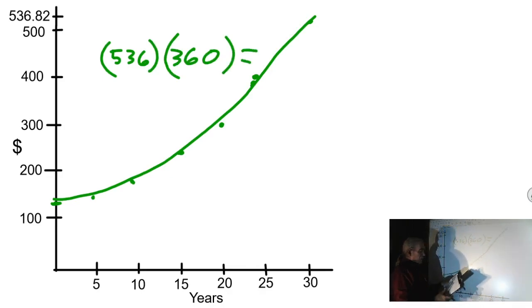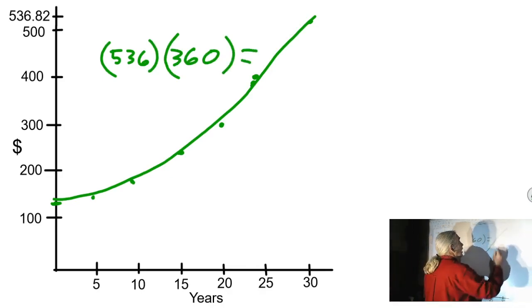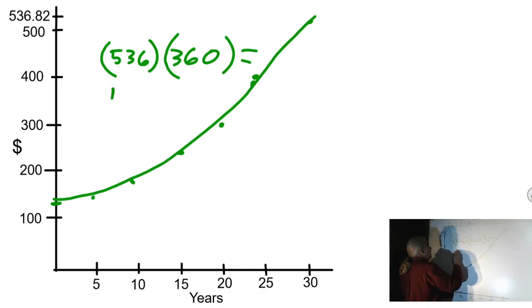which is almost $200,000. It's $193,253. This is how much you pay of this amount of money times 360 months or 30 years.